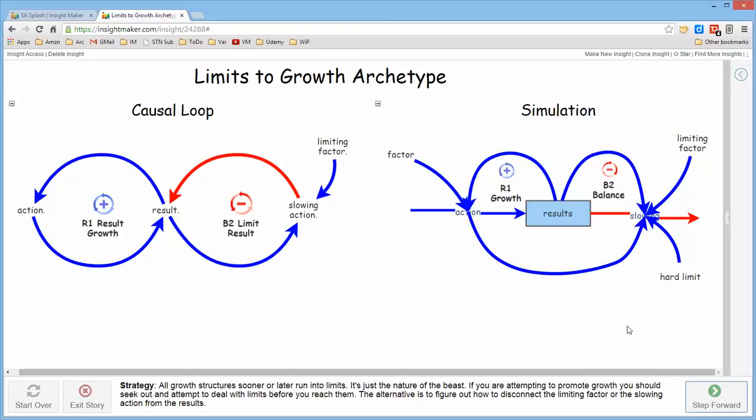If you can't or haven't realized ahead of time how to deal with them, once you do realize that there's a limiting factor in play, the best approach is to try and figure out how to disconnect the limiting factor or the slowing action from the results so that it no longer hampers the growth of the structure.